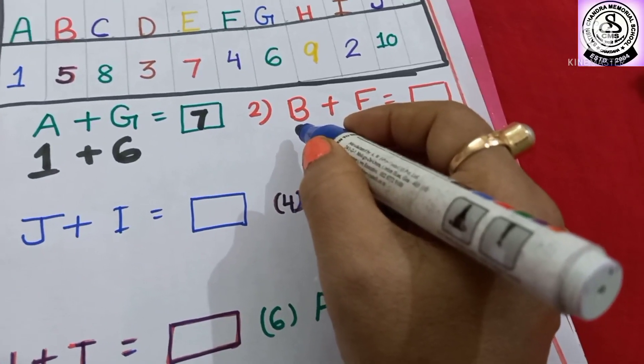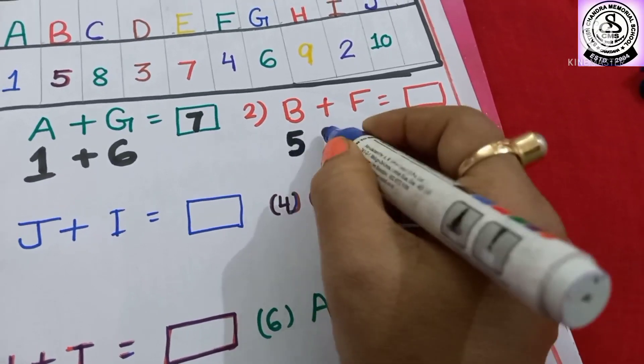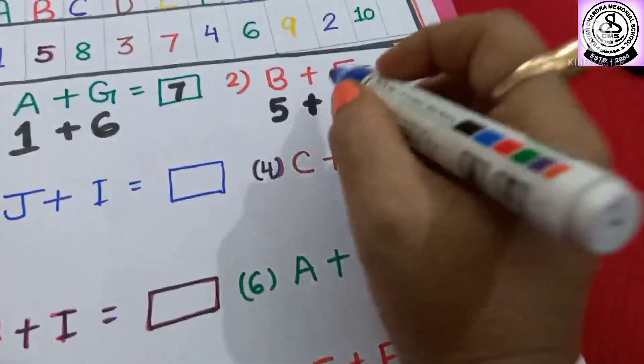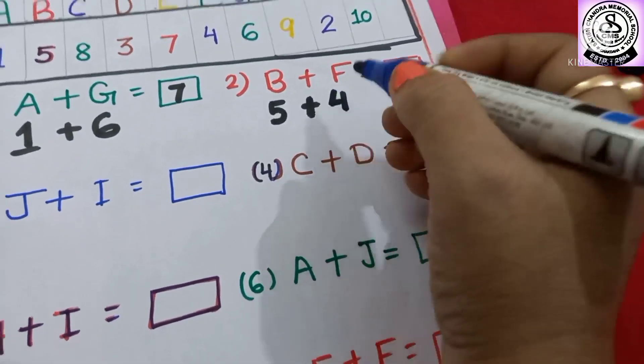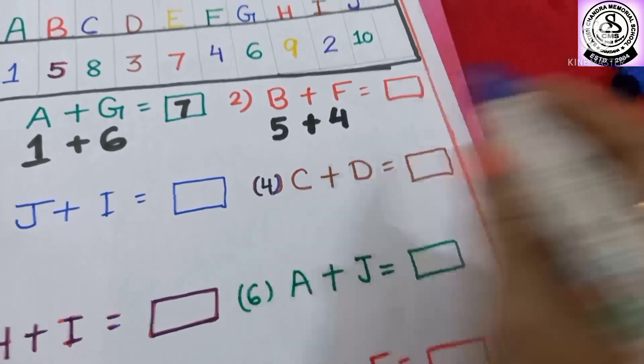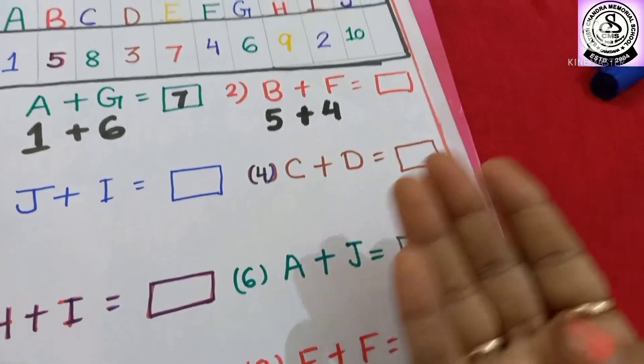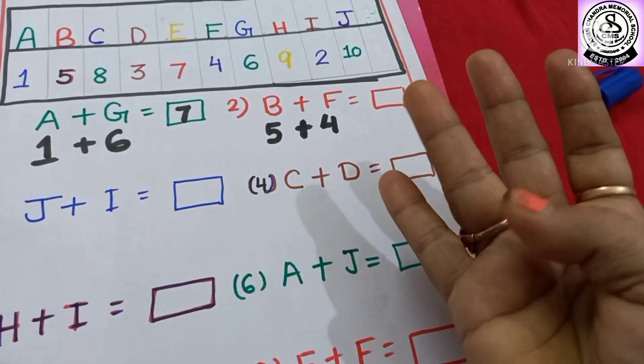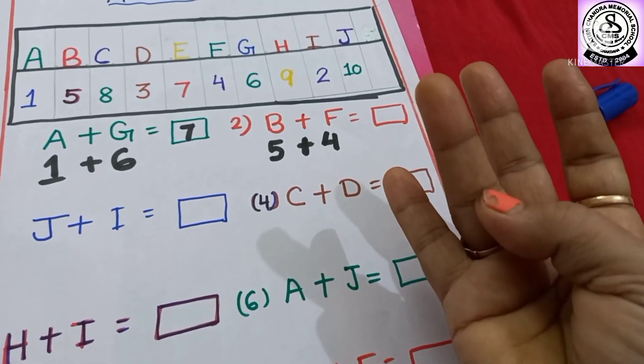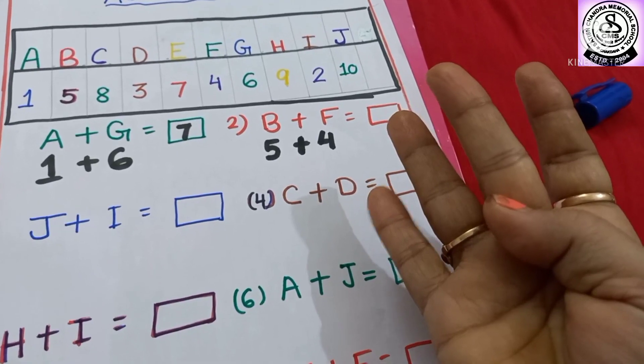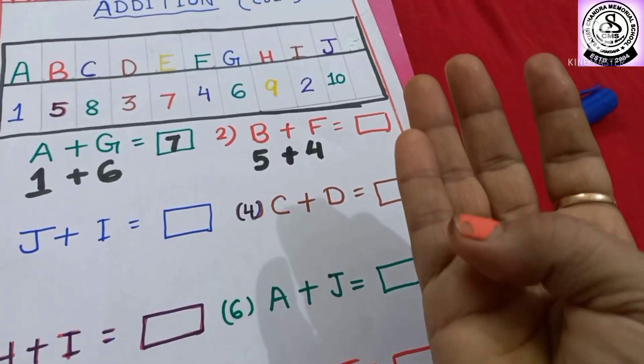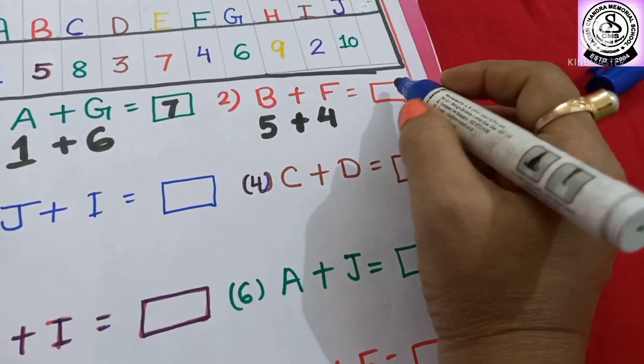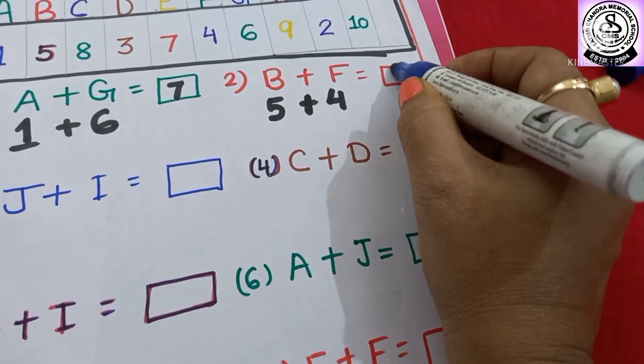Here you have to write B plus F. 5 plus F means 4. So, 5 plus 4. After 5 you have to count 4 finger marks: 6, 7, 8, 9. So here you have to write 9.